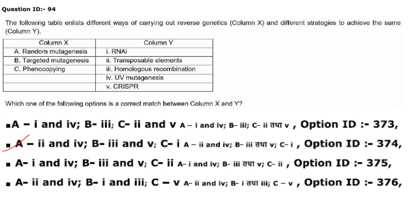Next: match the following — different ways of carrying out reverse genetics (column X) with strategies to achieve them (column Y). Random mutagenesis corresponds to transposable elements and UV mutagenesis — items 2 and 4. Targeted mutagenesis corresponds to homologous recombination and CRISPR — items 3 and 5. Phenocopying corresponds to RNAi — item C. The answer is option 2.